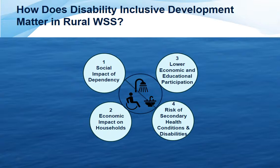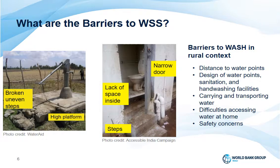Early exposure to poor WASH can also increase the risk of developing disabilities later on. Disability inclusive development matters for rural water and sanitation because of the barriers that persons with disabilities face in accessing WASH services. These barriers include distance to water points — long distances are a challenge and navigation may be difficult for persons with visual disabilities. Design of water points and sanitation facilities is another barrier: lack of ramp access, high steps, nothing to hold on to. On the left you can see examples of inaccessible infrastructure — broken uneven steps, high platforms, lack of space inside or narrow entrances. Persons with disabilities may also face difficulty turning different types of taps, as well as challenges in carrying and transporting water and accessing water at home.